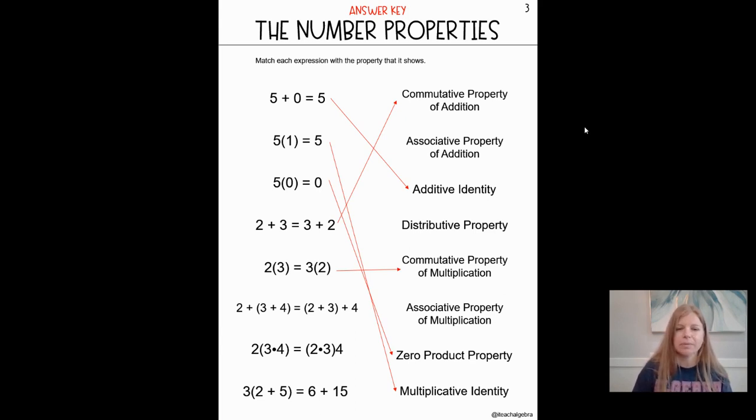Take a look at the next one. Two plus, and then in parentheses, three plus four is equal to in parentheses, two plus three, and then plus four. So here, the order of the numbers didn't change. It's still two, three, four, two, three, four. However, the grouping symbols change their location.